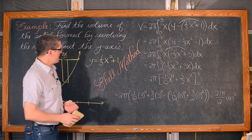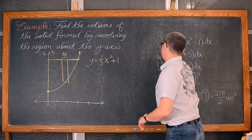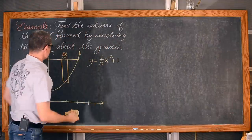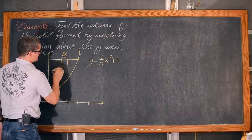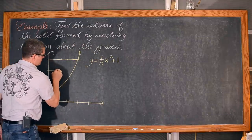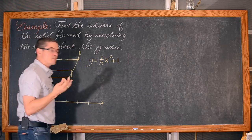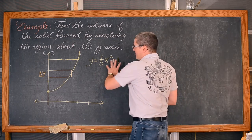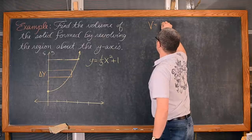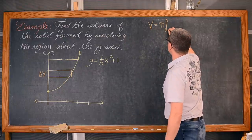Now for this particular example, let's see what it would have looked like had we set the problem up using the disk method. If we are going to use the disk method, that means we need representative rectangles which are perpendicular to the axis of rotation. If I draw a horizontal rectangle, that means we are going to be integrating with respect to y. Finding the volume using the disk method is π times the definite integral from a to b of r² dy, where r needs to be expressed in terms of y.